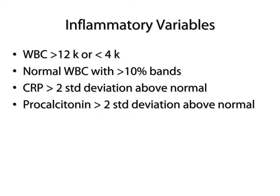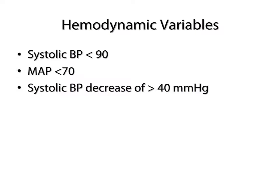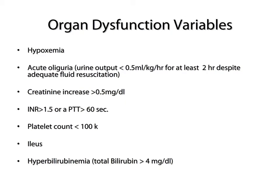Inflammatory values include elevated or decreased white blood cell counts, a normal white blood cell count with greater than 10% bands, a CRP elevated at least two standard deviations above normal, and, if available, procalcitonin measures greater than two standard deviations above normal. Hemodynamic variables include systolic blood pressure less than 90, or a decrease of greater than 40 mmHg from baseline, or mean arterial pressure less than 70. Organ dysfunction variables include respiratory findings syncing with hypoxemia, urinary findings with oliguria less than 0.5 cc/kg/hr for at least two hours despite adequate fluid resuscitation, increasing creatinine greater than 0.5 mg/dL, elevated INR, platelet counts less than 100,000, and hyperbilirubinemia with bilirubin greater than four.